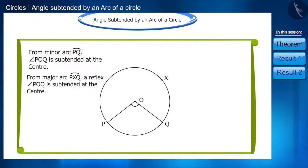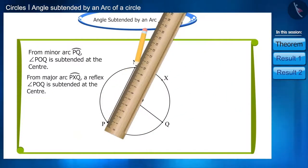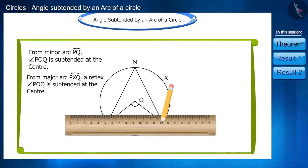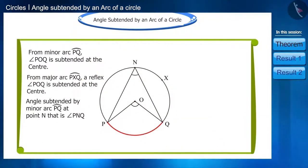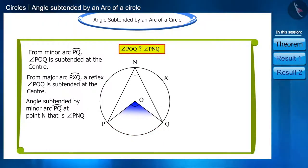If we take point N on the remaining portion of the circle and connect the points P and Q to point N, in this way we will get the angle subtended by the minor arc PQ at point N, that is angle PNQ. Friends, will there be a relation between angle POQ and angle PNQ?